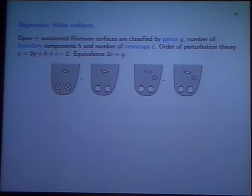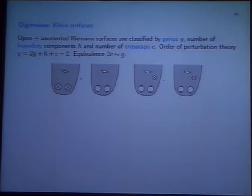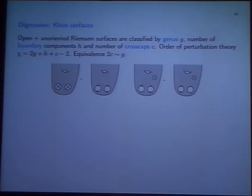This is a digression — really an exercise in perturbative open and unoriented string theory that I wasn't able to find in any textbooks. This exercise shows how, if you cancel the tadpoles at tree level, you get a consistent perturbation theory at all loops. Open and unoriented Riemann surfaces are classified by genus, the number of boundary components, the number of cross-caps, and the order of perturbation theory given by the Euler characteristic. At the topological level, two cross-caps are equivalent to a handle.